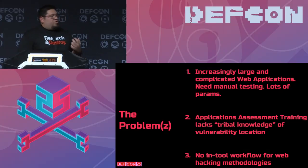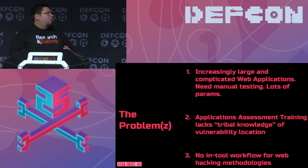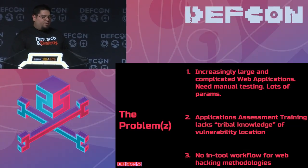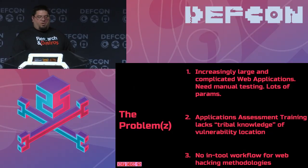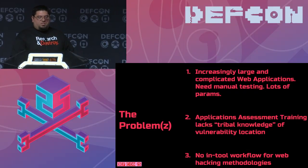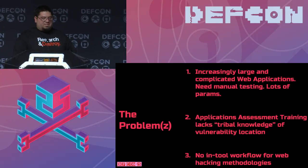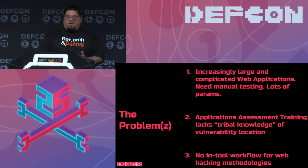So the three problems we're trying to address with the two tools we made: applications are getting completely large with lots of parameters, and you don't know where to start. If you have a large domain with maybe 150 dynamic parameters to fuzz, it can get unwieldy. You don't want to rely entirely on a scanner — they don't have full coverage. So we wanted something to alert us when there are potential issues, specifically parameters that might be vulnerable to certain vulnerability classes. It's for manual testing, not automated testing.